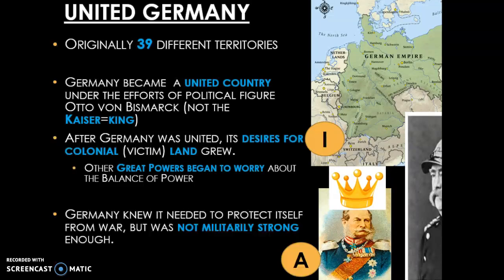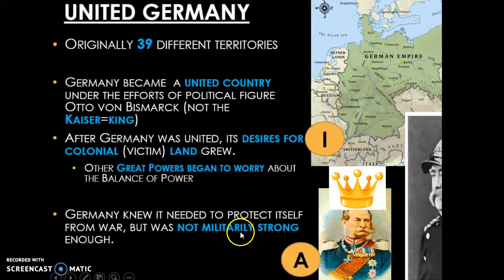Germany knew that it needed to protect itself from war. Germany knew that its imperialistic actions were going to create lots of enemies. But Germany was not strong enough militarily — it was a brand-new united country, just united by Otto von Bismarck — so they didn't have a large standing unified army and could not rely on militarism.